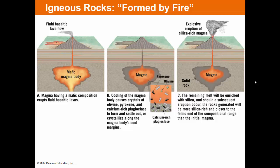Here's an example: a magma with mafic composition produces a very mellow basaltic flow. As the magma body cools near the surface, crystals of olivine, pyroxene, and calcium-rich feldspars form — they're heavier, so they fall to the bottom or stick to the walls. The remaining melt now has a higher percentage of silica because those low-silica minerals have crystallized out. Subsequent eruptions will therefore be more violent, producing more felsic rocks than the original magma. That's magmatic differentiation.